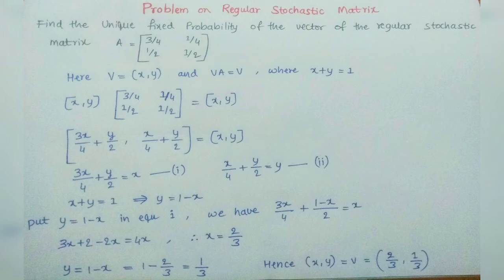We have 3x/4 plus (1 minus x)/2 equals x. It becomes 3x plus 2 minus 2x equals 4x. Then the x value becomes 2/3.